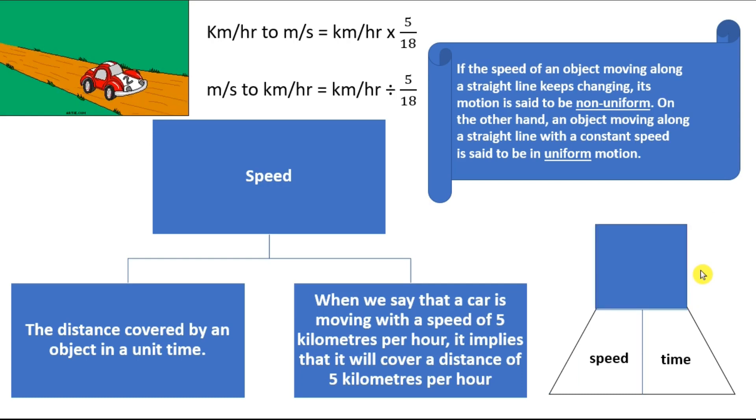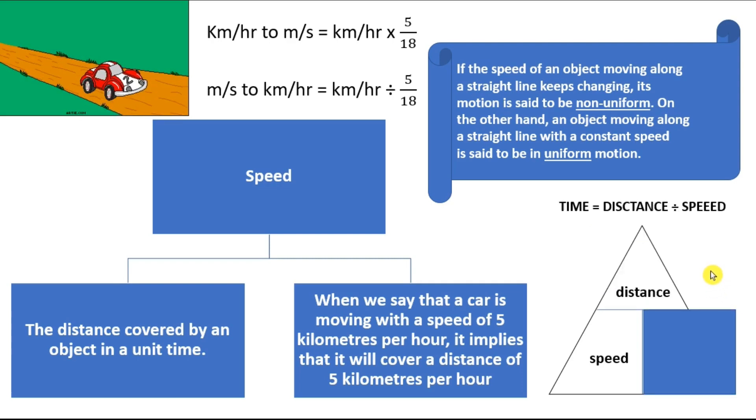If I have to find the distance, then speed and time should be given. Speed into time is equal to the distance. And if I need to find the time, it is distance divided by speed. This small triangle encloses all these three formulas. You don't need to memorize.